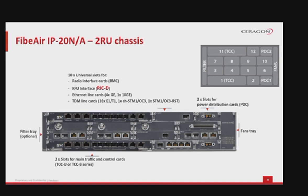Two additional components in the two rack unit chassis are the filter tray, which is optional and used to protect the system from dust with a designated place at the left side of the chassis, and the fans tray, which incorporates four fans inside and has a designated place at the right side of the chassis.